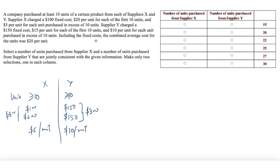Including the fixed costs, the combined average cost for the units was $20 per unit. Now what I know is that the company bought 10 units from X for $300 and 10 units from Y for $1300. So the company bought 20 units for $1600, which means that the average price over here was $30 for these 20 units. But the overall average cost for all the units purchased was $20.